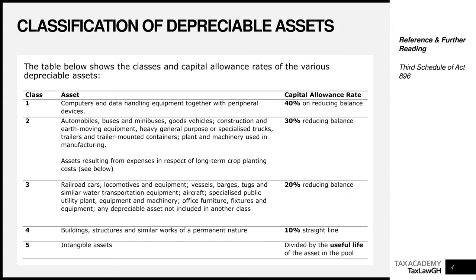Capital allowance seeks to mirror what accounting does for depreciation. Accountants familiar with IAS 16 on property, plant and equipment will recognise the similarity. However, whereas accountants have flexibility in determining their own accounting policy — using reducing balance for computers or straight line for buildings — in tax, the law has classified every asset and dictates how it must be depreciated. Tax is fixed.